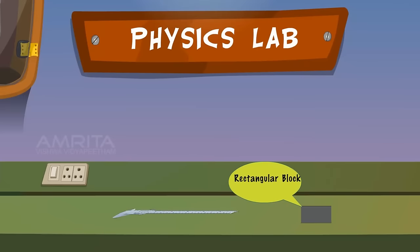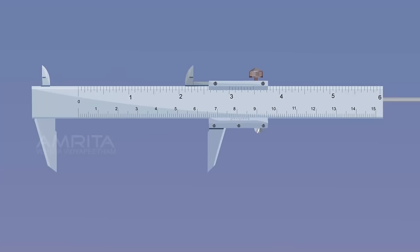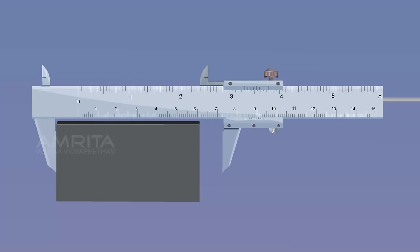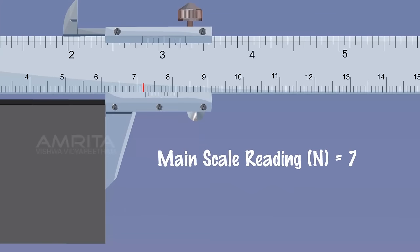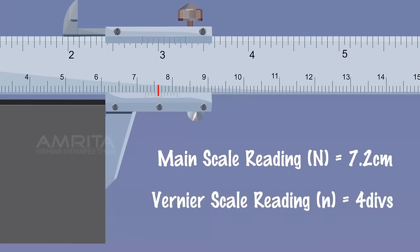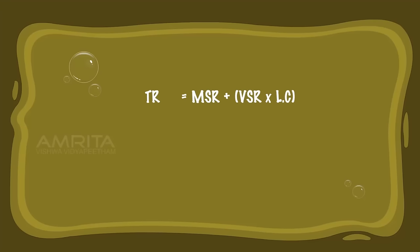Rectangular block. Materials required: Vernier Calipers and a rectangular block. Place the rectangular block lengthwise in between the outer measuring jaws of the vernier calipers and note its MSR and VSR readings. Calculation: TR = MSR + (VSR × least count) = 7.2 + (4 × 0.01) = 7.24 cm, so L = 7.24 cm.